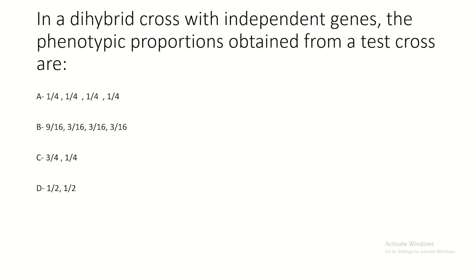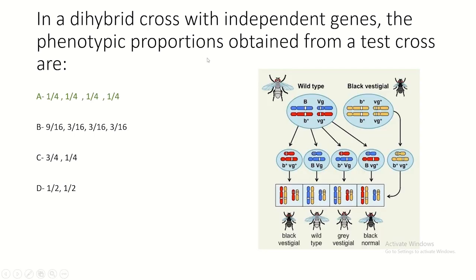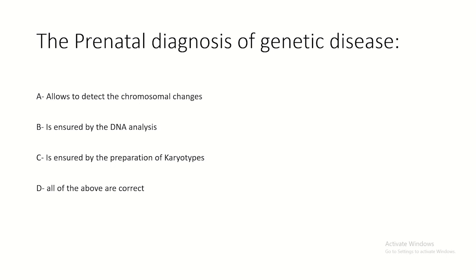In a dihybrid cross with independent genes, the phenotypic proportions from a test cross are 25%, 25%, 25%, 25%.